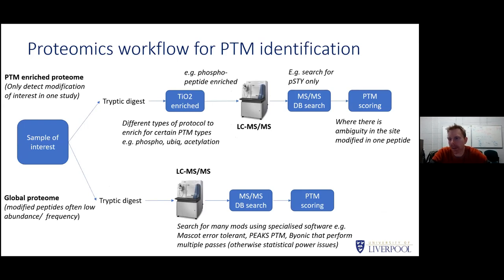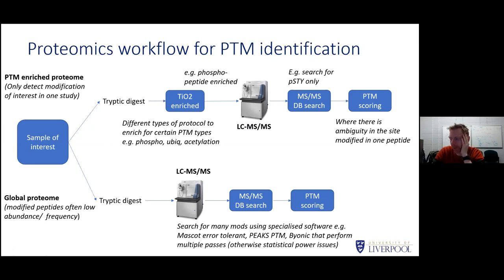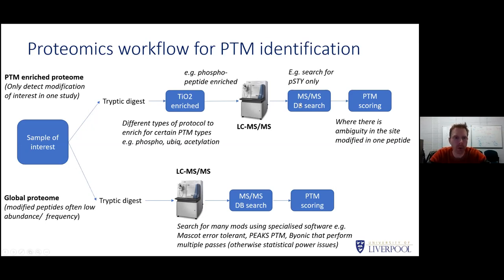When thinking about PTM analysis, there are largely two different kinds of workflows. The upper branch, where most data on modifications comes from, starts with your sample, you extract your proteins, do a tryptic digest to get it into peptide form, and then do a specific enrichment step for one kind of modification. Phosphorylation is by far the most studied modification — lots of people use metal ion enrichment, where phosphate binds to metal ions in a column. You then do your database search, searching for peptides to be unmodified or phosphorylated on serine, threonine, or tyrosine, followed by additional PTM scoring.